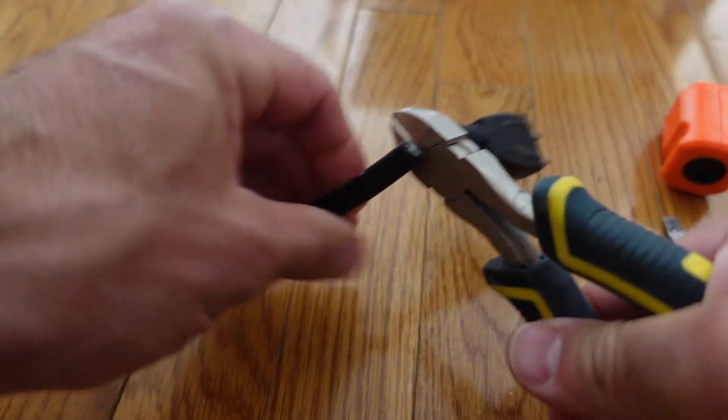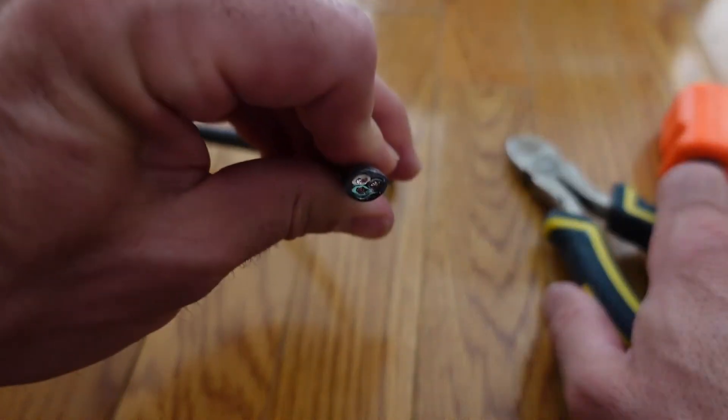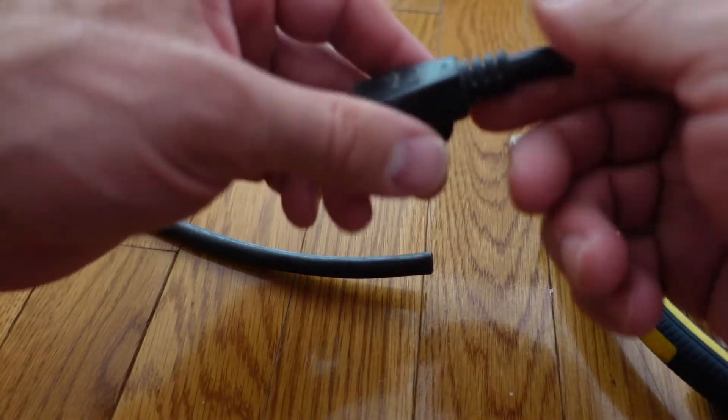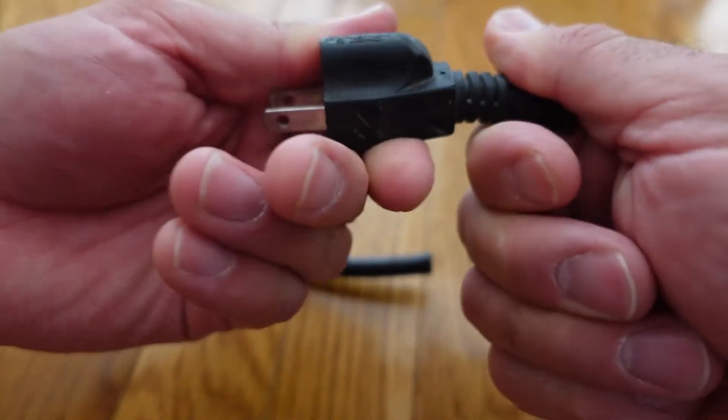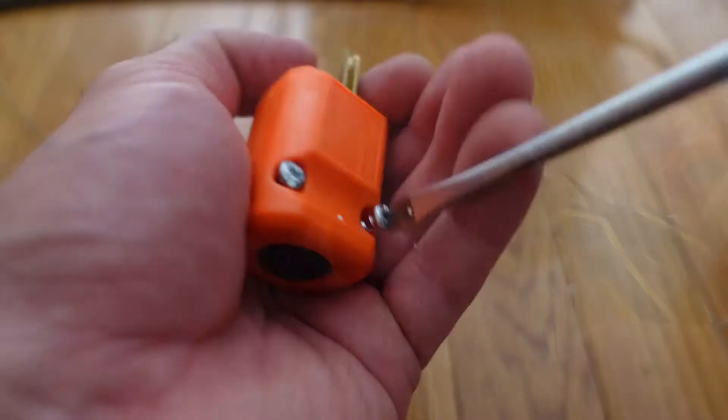You can see in there there is a black, a white, and a green wire. In this application the black is your hot, the white is your neutral, and the green is the ground. However, that could vary location to location. At least in North America that's usually the standard.